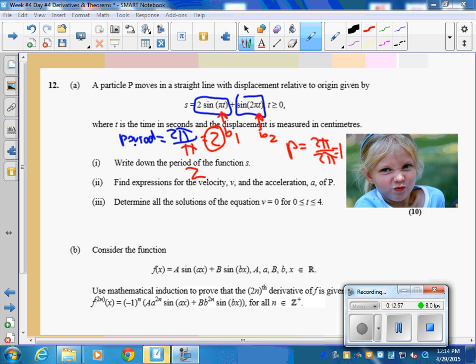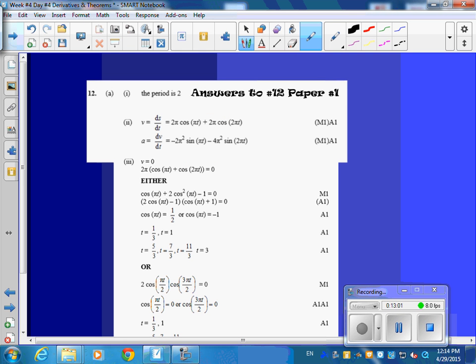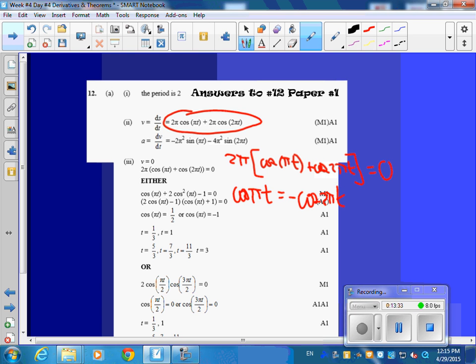Then find expressions for velocity. I think you could do this, couldn't you? Take the derivatives of those and simplify it. Just take a look at those. But for part three, you're going to set this thing here equal to zero. So I'm going to take out a 2 pi and get cosine pi t plus cosine 2 pi t equal to zero. If you divide by 2 pi, zero by 2 pi, you're just going to get cosine pi t equal negative cosine 2 pi t.